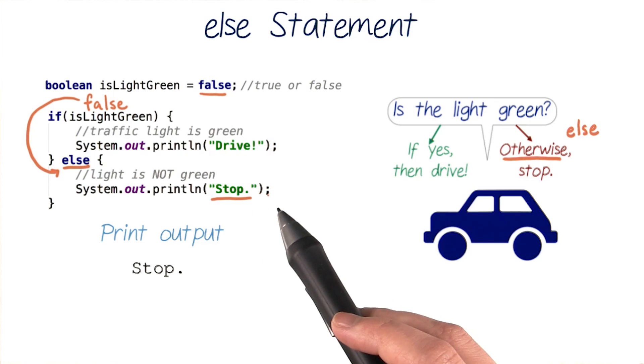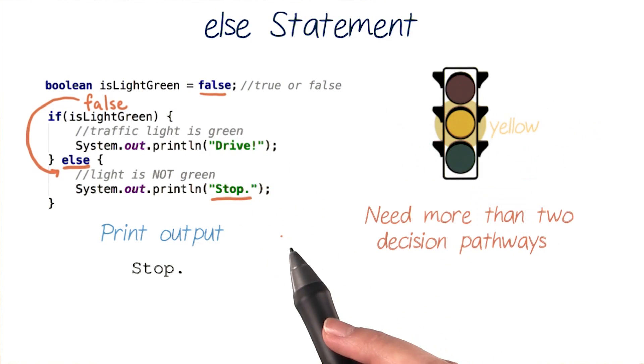But I bet you're wondering, what if the traffic light is yellow or flashing? We'll need more than just two decision pathways to take. Next, we'll see how to construct even more pathways.